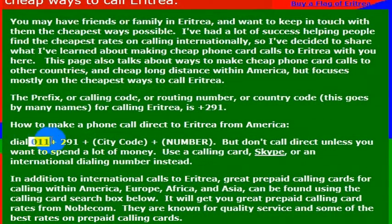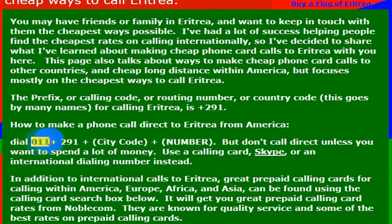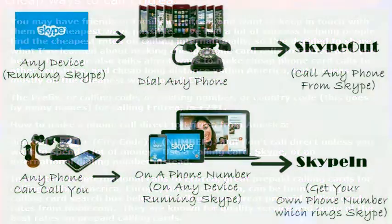All you do is dial 011 and then the country code, which is 291. Your phone does have to be enabled to make an international phone call in order to dial this 011, and then you would dial the country code again for Eritrea, which is 291.